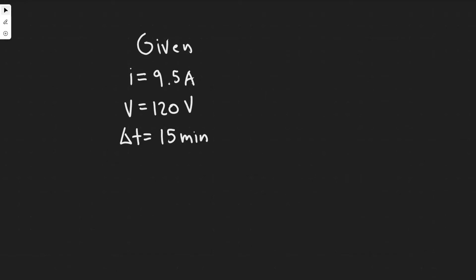In this problem, we're told a hairdryer draws 9.5 amps when plugged into a 120-volt line. Part A: what is the resistance? Part B: how much charge passes through it in 15 minutes?